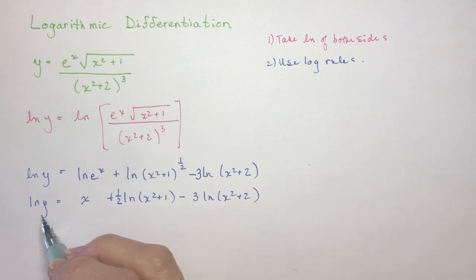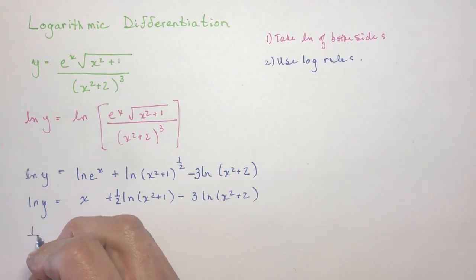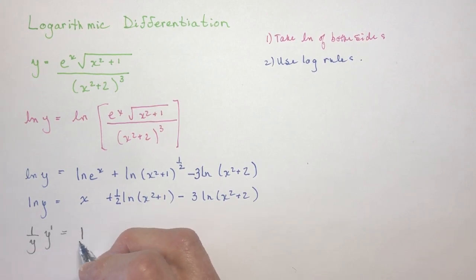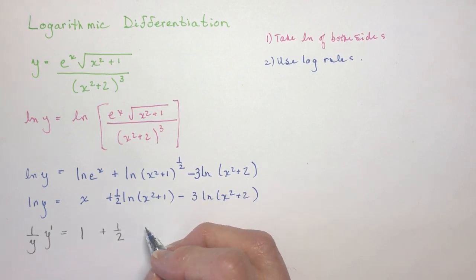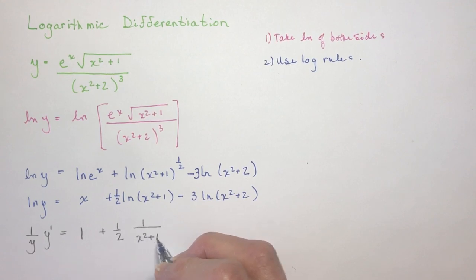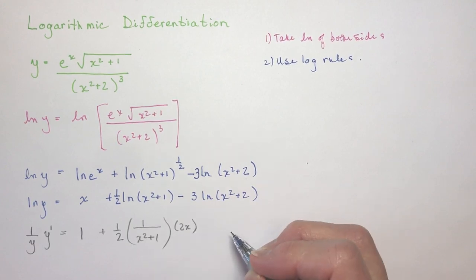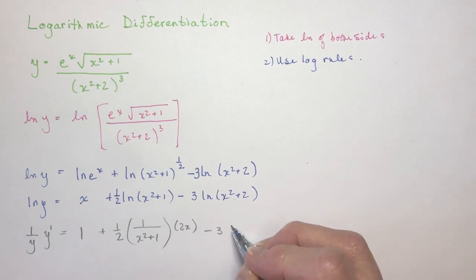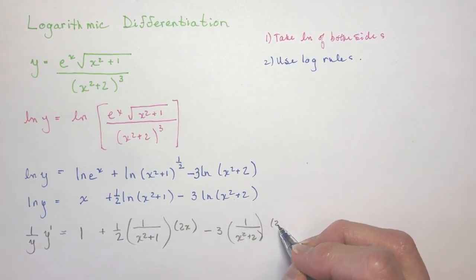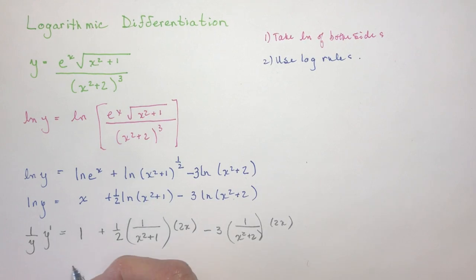So if I take the derivative of the ln of y, that's going to be the derivative of ln y is 1 over y, y prime. This is implicit differentiation now. So we're taking the derivative of y with respect to x. The derivative of x, of course, is 1. And this one's going to be a half. And now when I take the derivative of ln of something, it's 1 over that. So I'll put that in brackets, times the derivative of the function. So that's going to be 2x. And this one is going to be minus 3, 1 over this, x squared plus 2, times the derivative of x squared, which is 2x.